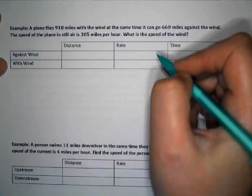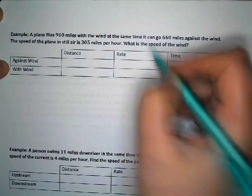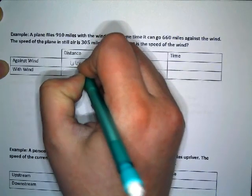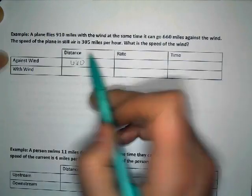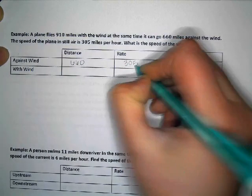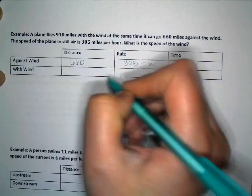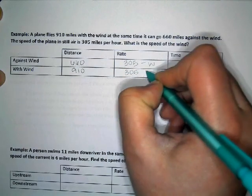So against the wind, here we have the distance is 660 miles. If you're against the wind, the speed of the plane in still air is 305. So this is minus the wind. You can go 910 miles, this is 305 plus the wind.